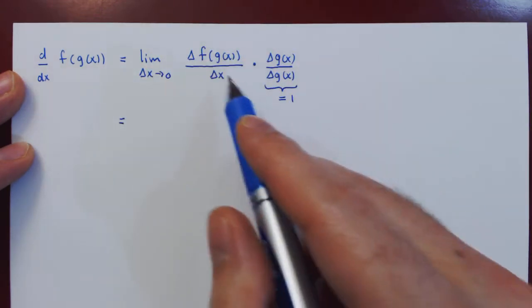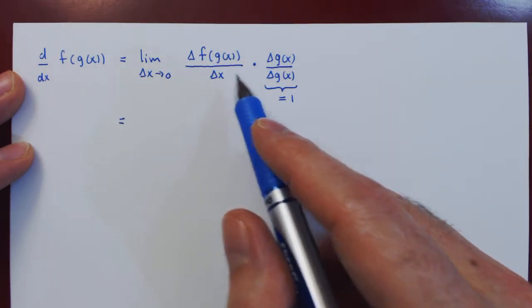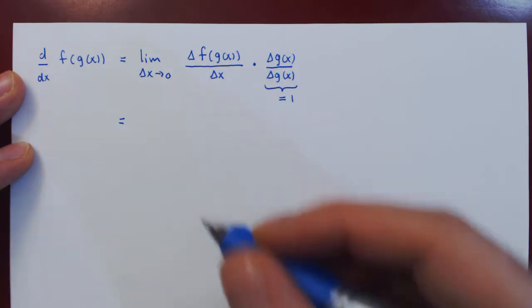And now all we have to do is swap the change in x with the change in the function g at the point x.